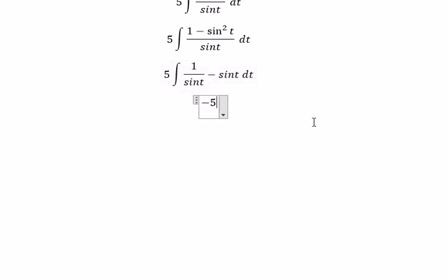The integral of 1 over sin t gives negative ln of the absolute value of cosecant t plus cotangent t. The integral of sin t gives positive cos t with the coefficient 5.